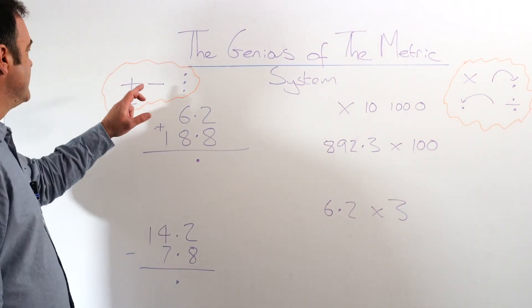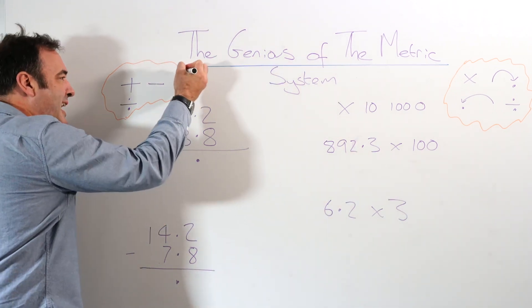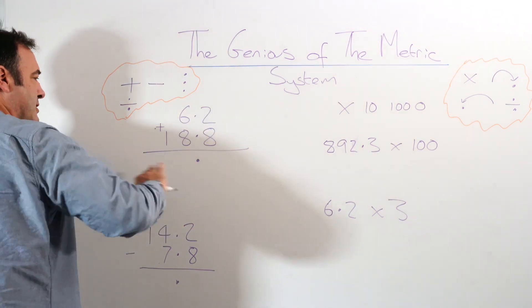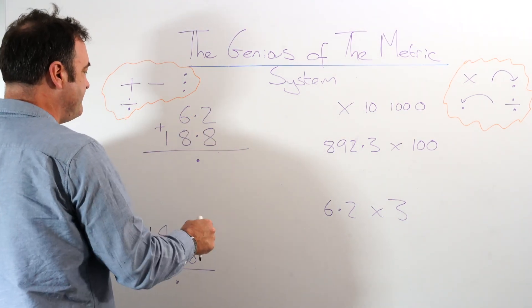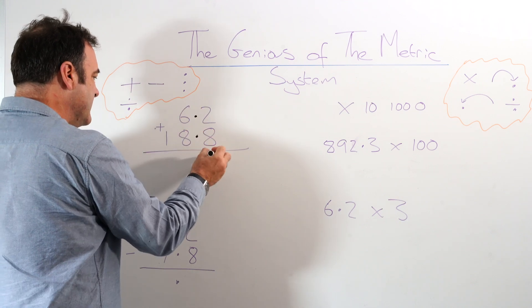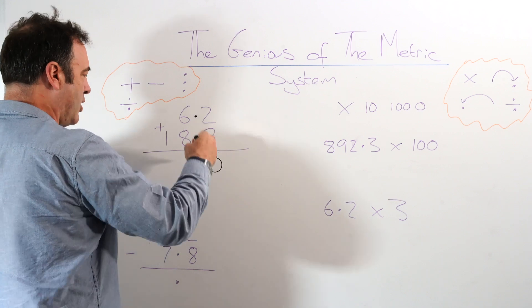For add, subtract and divide, what we say is line the dots up. Line everything up using the dots even if it's a different number of digits. So here I've got my example: 6.2 plus 18.8. We've lined them up using the dots. Can you see?